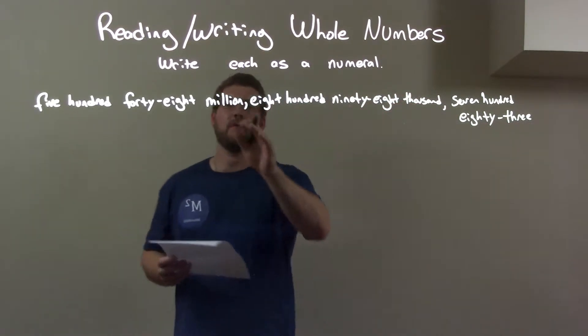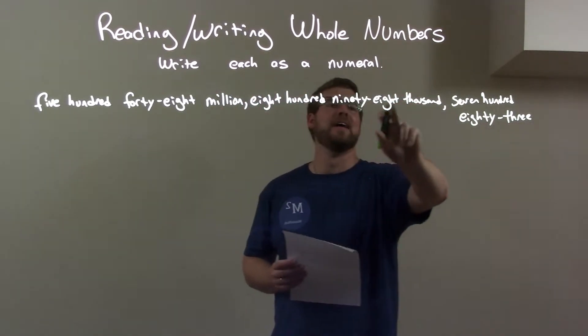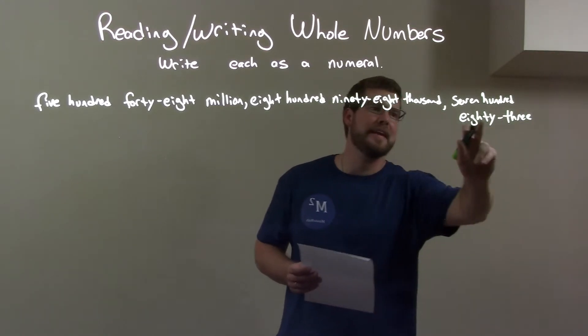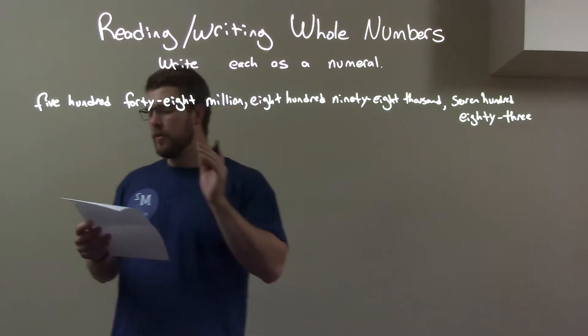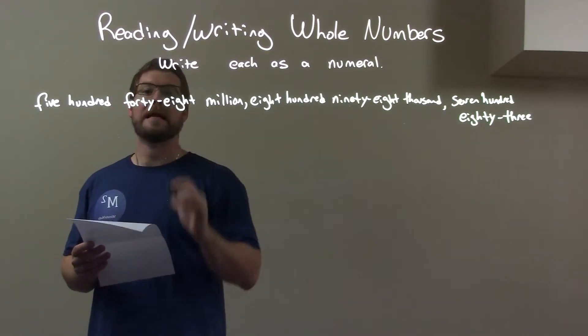So, we have five hundred forty-eight million, eight hundred ninety-eight thousand, seven hundred and eighty-three. So, first, let's start with the five hundred. So, we have five hundred forty-eight million.